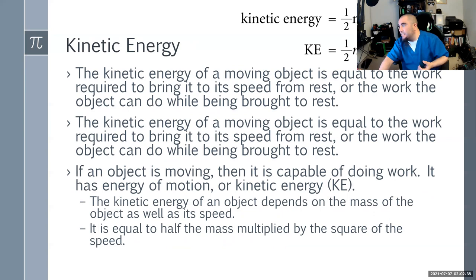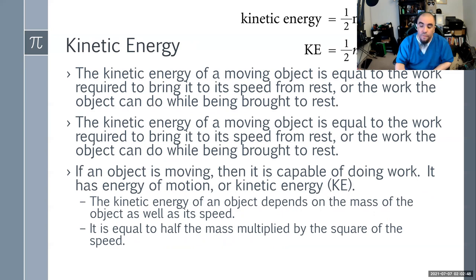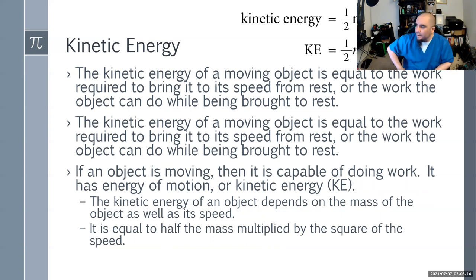Kinetic energy of a moving object equals the work required to bring it to speed from rest, or the work required to bring it to rest. Kinetic energy equals one-half times mass times speed squared: KE = ½mv². If an object is moving, it is capable of doing work. Kinetic energy depends upon both the mass and the speed of the object.